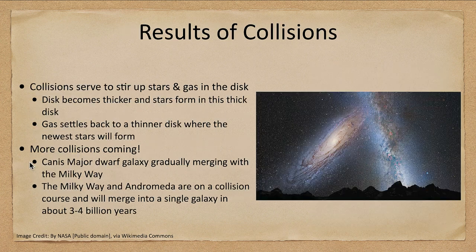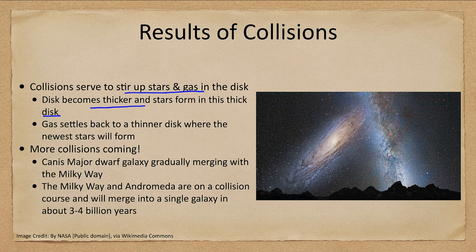What happens with these collisions? The collisions stir up the gas and dust in the disk, making the disk thicker, and stars form in that thicker disk. Then the gas settles back down — gravity pulls it back to the disk. So we get some stars forming in what we call the thick disk, and then as the gas settles back to the thin disk, the newest stars form there. Those are the extreme Population I stars.